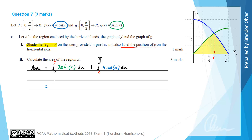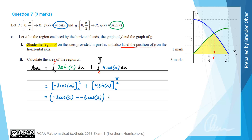The area equals the anti-derivative of 3sin(x), which is −3cos(x), evaluated between 0 and C, plus the anti-derivative of 4cos(x), which is 4sin(x), evaluated between C and π/2. Evaluating gives: [−3cos(C) − (−3cos(0))] + [4sin(π/2) − 4sin(C)].